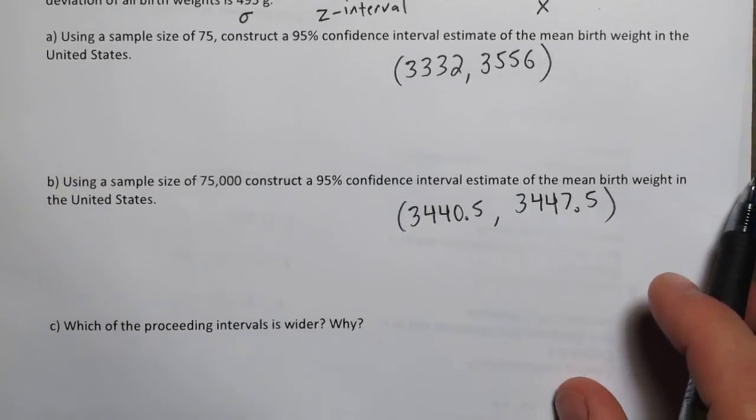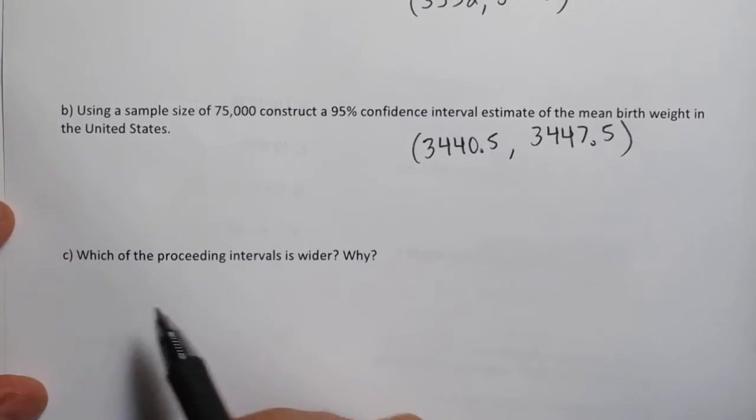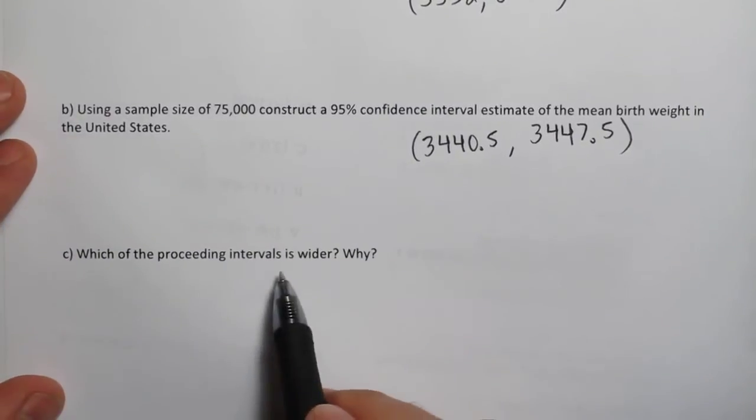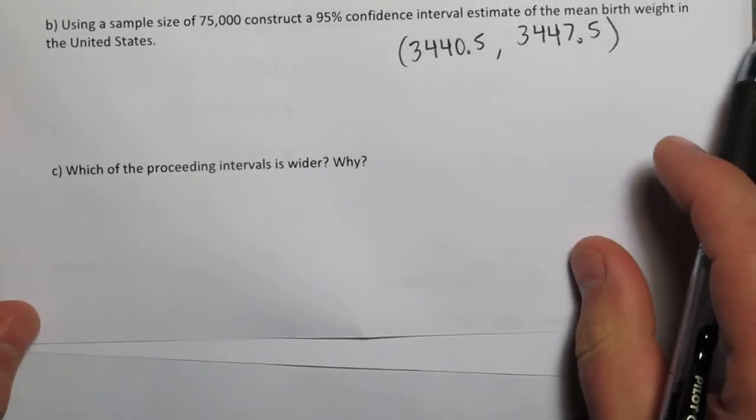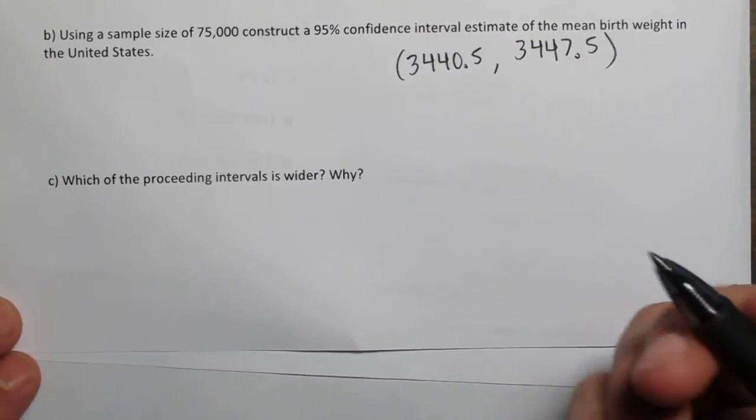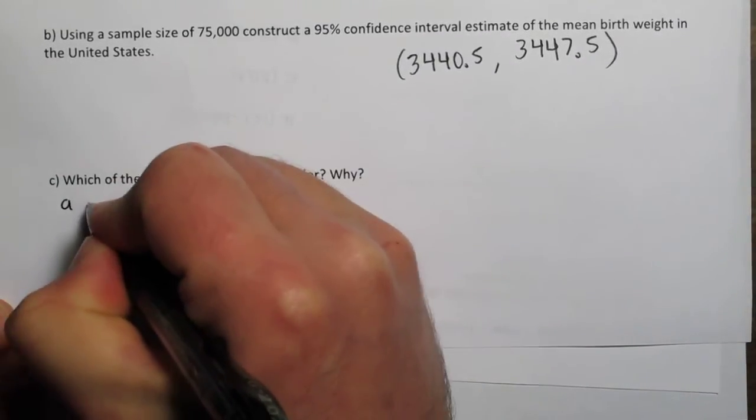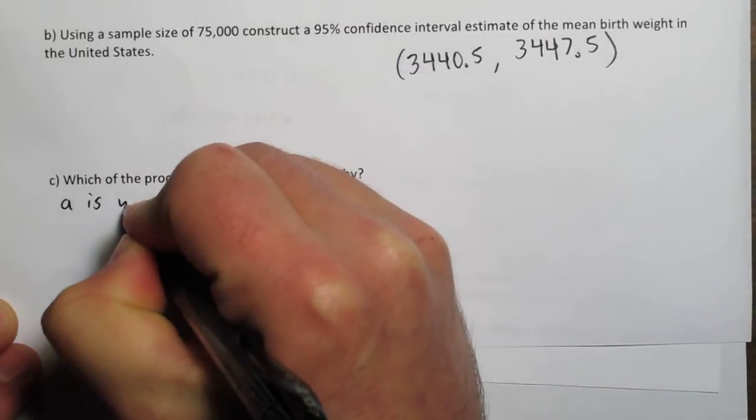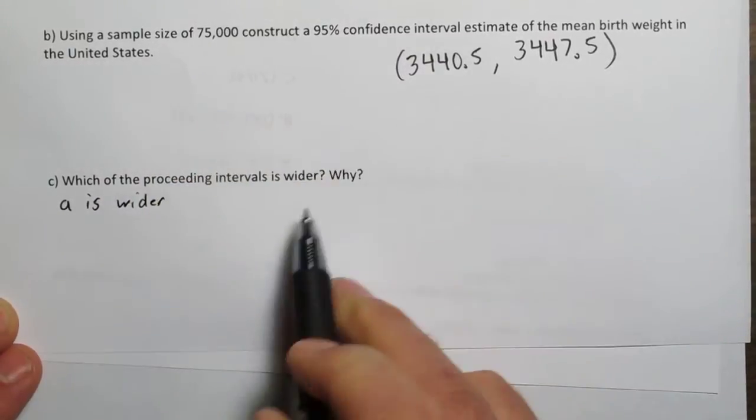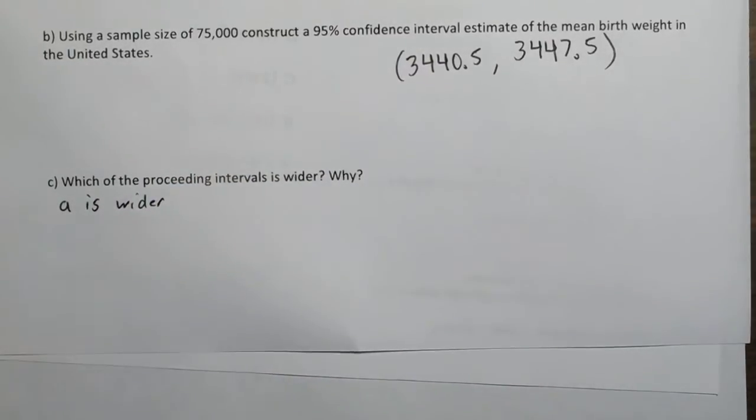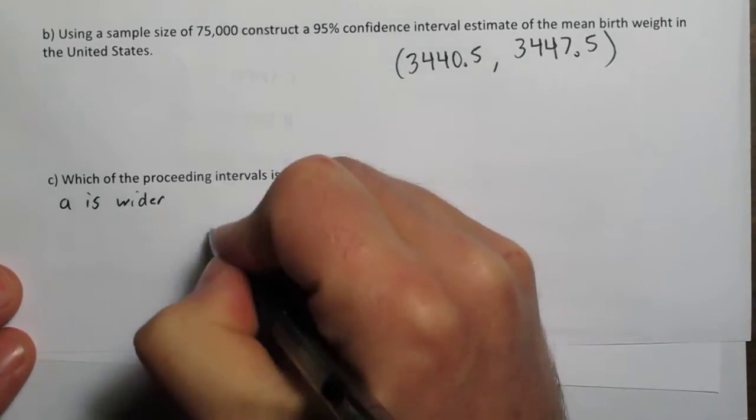So part C deals with what happened there. Which of the proceeding intervals is wider? Well, the wider interval is obviously A. A is wider. Then it asks why. Well, if we look at how these intervals are constructed,